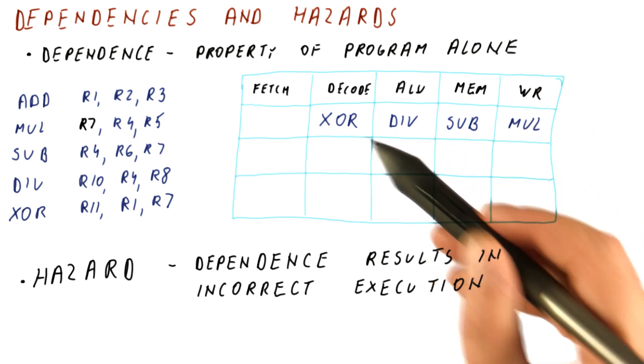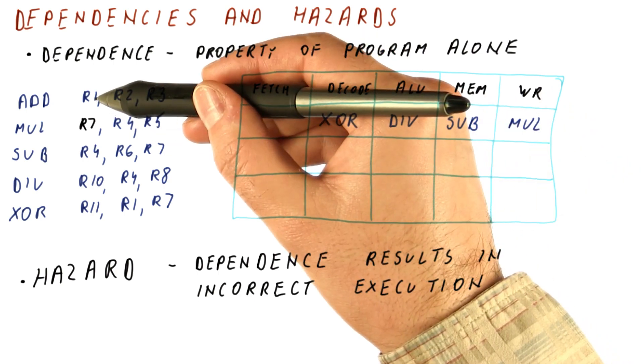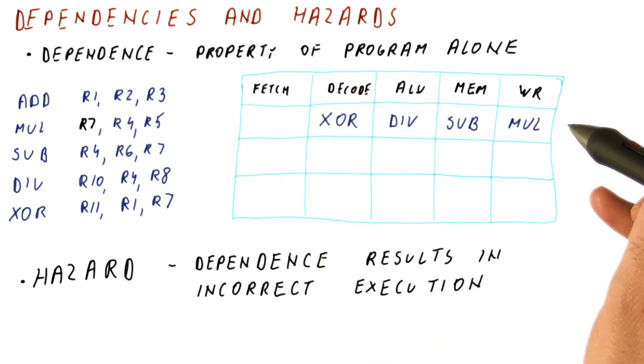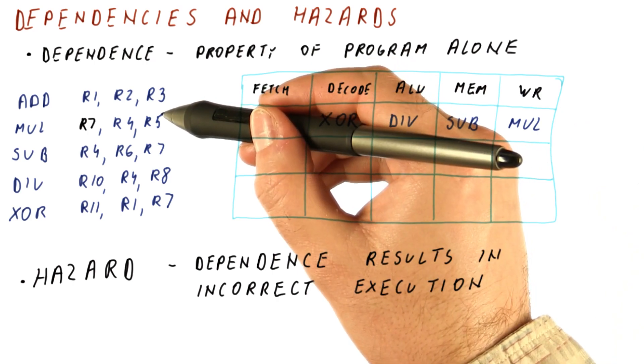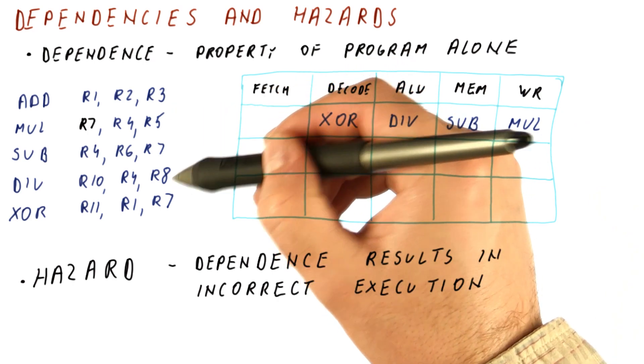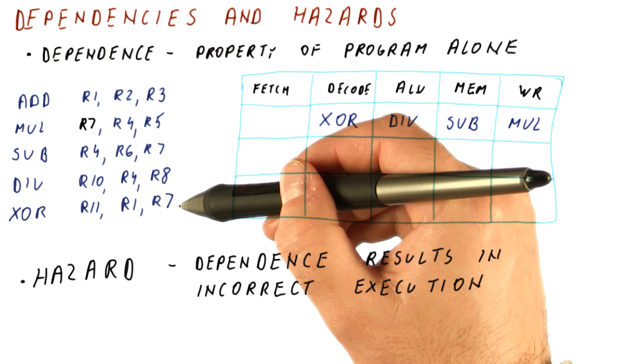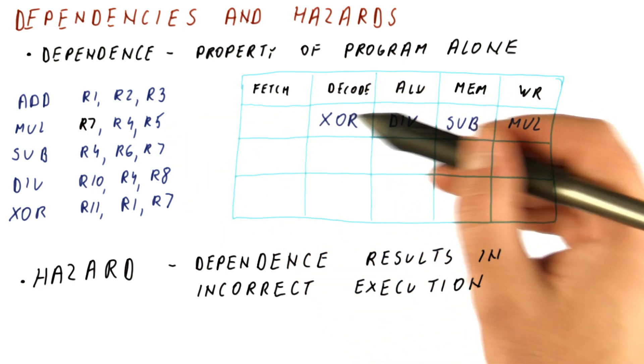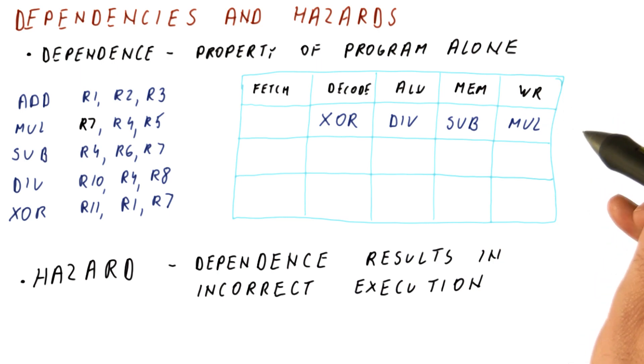So as you can see, the dependence between the add and the XOR is not a hazard in this pipeline. Pretty much in this pipeline, if there are three or more instructions between the producing and the consuming instruction, then the consuming instruction reads the register after the producing one has already written it.